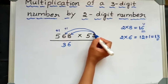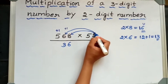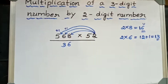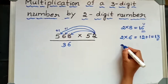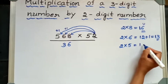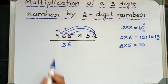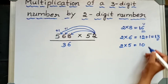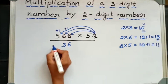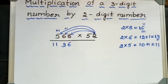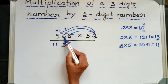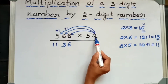Now, from this 2, I have to multiply 5. That is 2 × 5 is 10. Then plus 1 is 11. Now we have multiplied this 568 by 2.